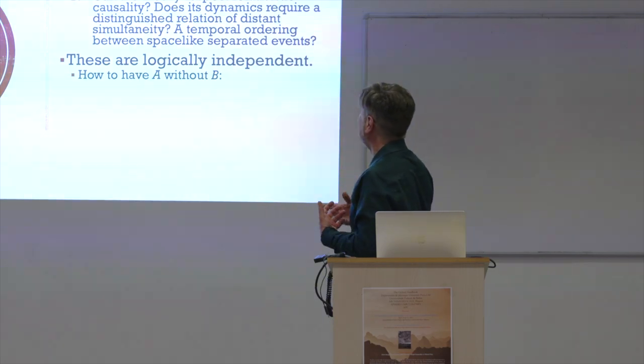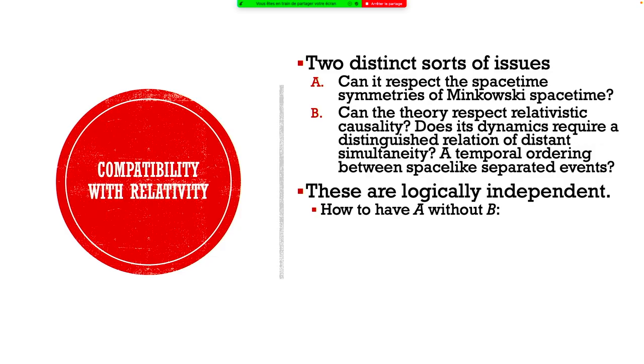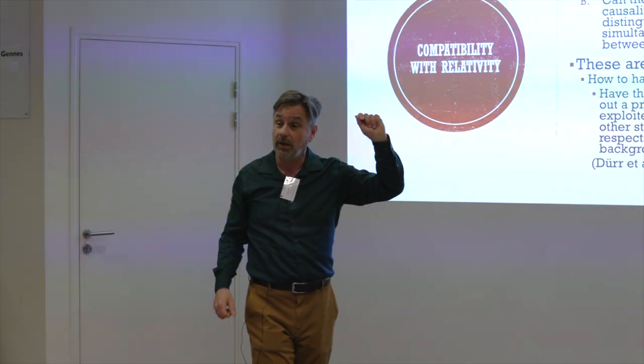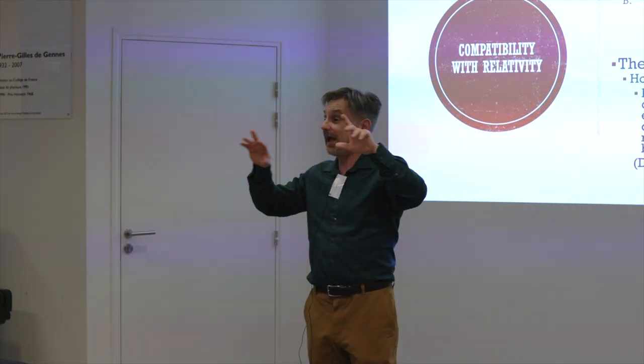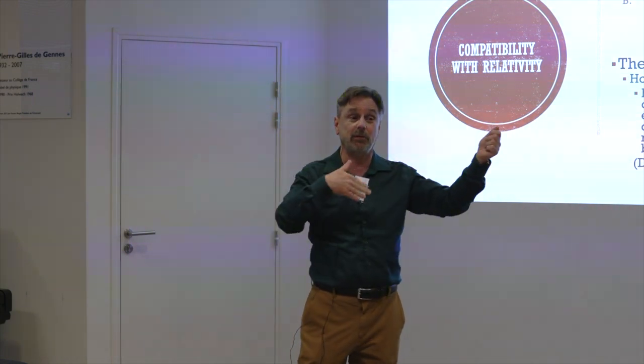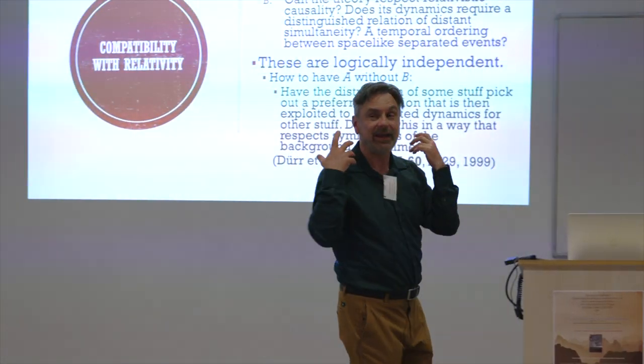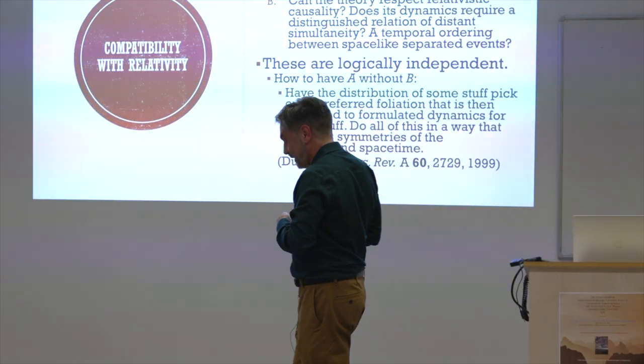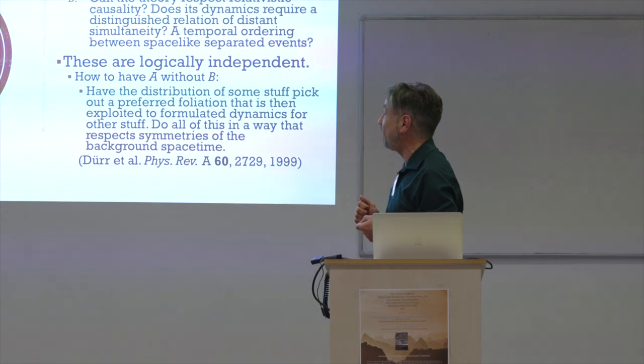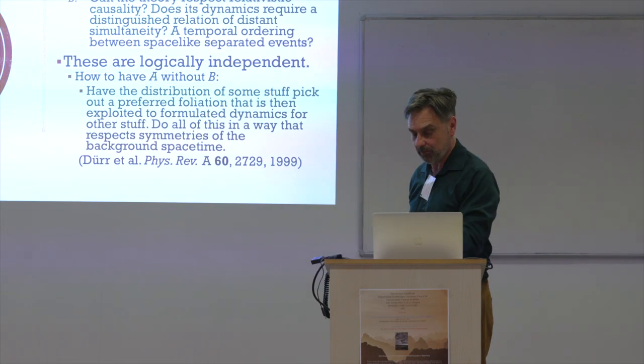And just to illustrate that, you can have A without B. And this got mentioned in the discussion. There is a version of Bohmian-type theories, hypersurface Bohm-Dirac models, which basically the idea is you put in an extra field which evolves according to Lorentz-covariant equations, which the structure of that field picks out a distinguished foliation, then you hang the dynamics of the Bohm particles on that. So it's got action at a distance, but the whole thing is indeed formulated in Lorentz-covariant equations and it respects the symmetries of the background spacetime.